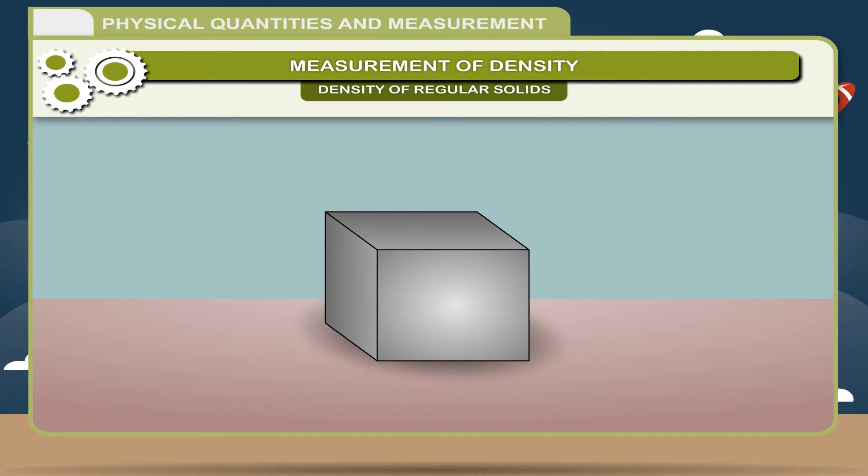The volume v of the object with regular shape is calculated from its dimensions. Thus, knowing the mass and volume of a substance, we can calculate its density by using the formula ρ = m/v.